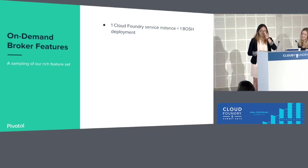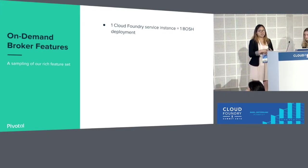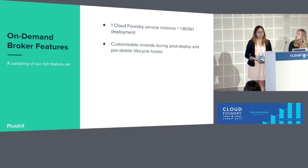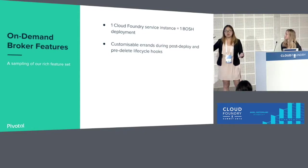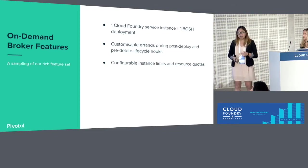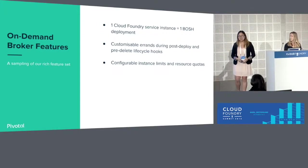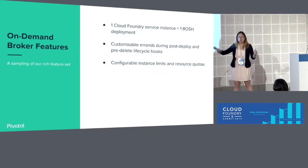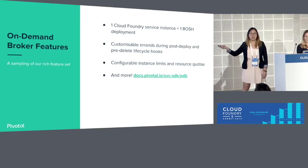Here are some key features of the on-demand service broker. The main abstraction is that the on-demand service broker maps one Cloud Foundry service instance to one Bosh deployment, giving you all the isolation guarantees of different Bosh deployments. The ODB also provides customizable lifecycle errands — for example, if you're configuring RabbitMQ in a special way and need a health check after your cluster comes up, you can plug a custom shell script into the on-demand service broker and have it run automatically. The ODB also enables operators to configure instance limits and resource-based quotas.